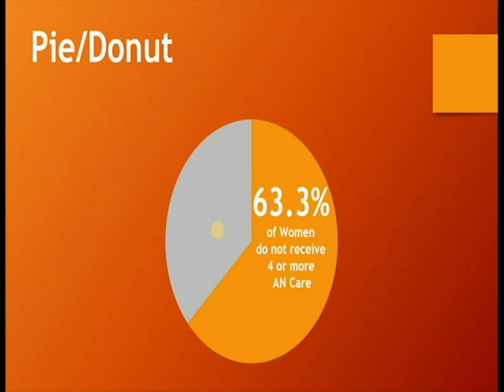A big number shows the number of people. For example, if you want to see the percent of women who do not receive 4 or more ANC visits, you can see that number of people displayed here.